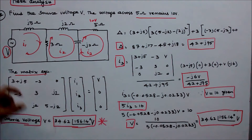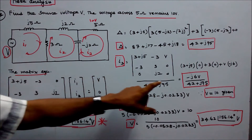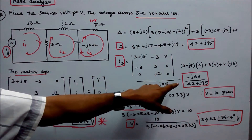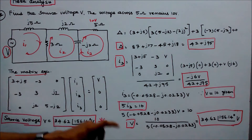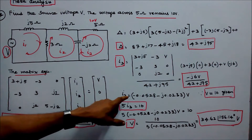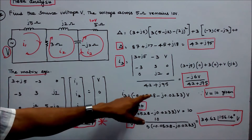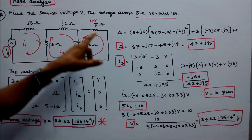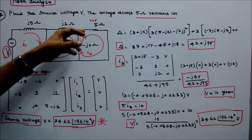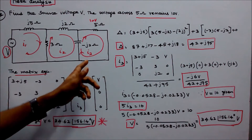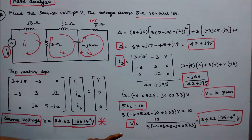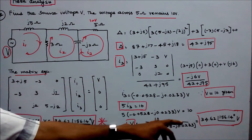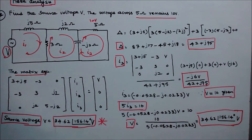Delta equals 42 + j95. Solving for i3: i3 = (minus j6 × V) / (42 + j95), which simplifies to i3 = (minus 0.0528 minus j0.0233) × V. Since the voltage across the 5 ohm resistor equals 10 volts, i3 × 5 = 10, so we can find V. The source voltage V = 34.62 angle 156.14 degrees volts.